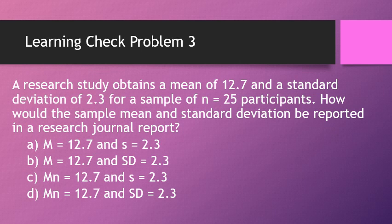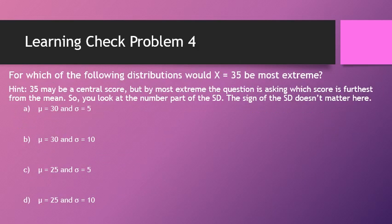Problem three: A research study obtains a mean of 12.7 and a standard deviation of 2.3. How do we report this? The correct format is: M = 12.7 and SD = 2.3.